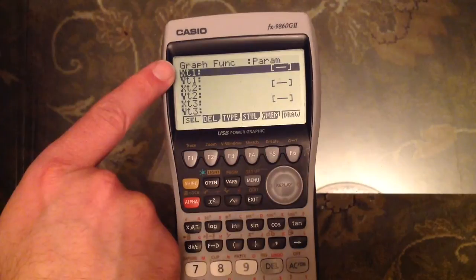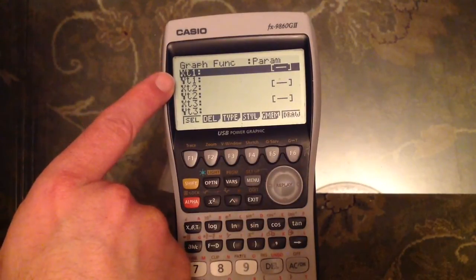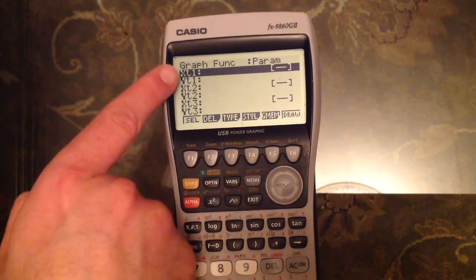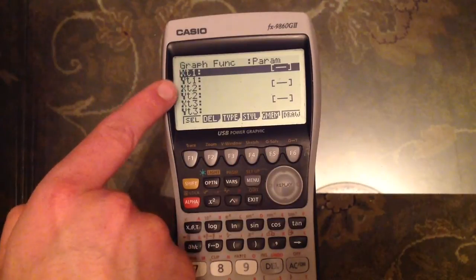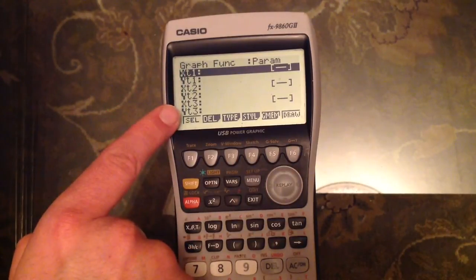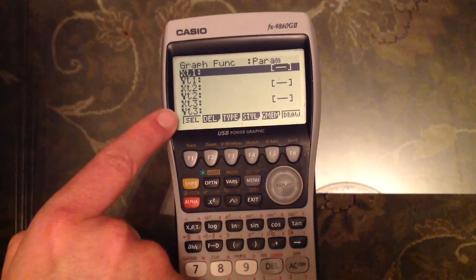You'll notice that on the left it changes to XT1, YT1, and so on. The ones are indicating this is for graph number 1, the Ts are telling you that it's parametric, so we've got graph 1, 2, and 3 displayed on there.